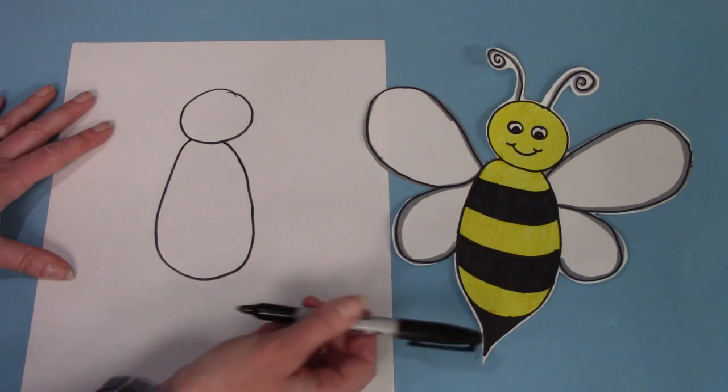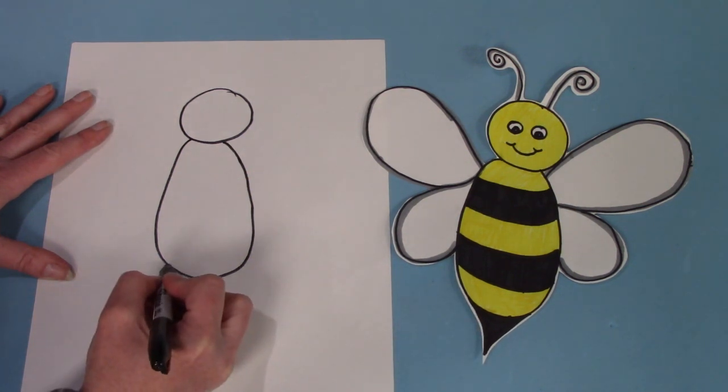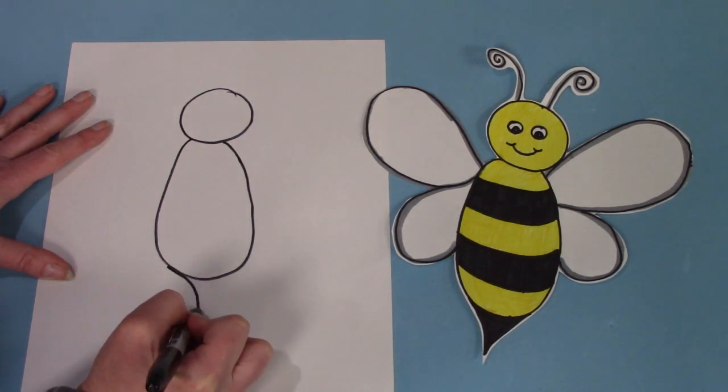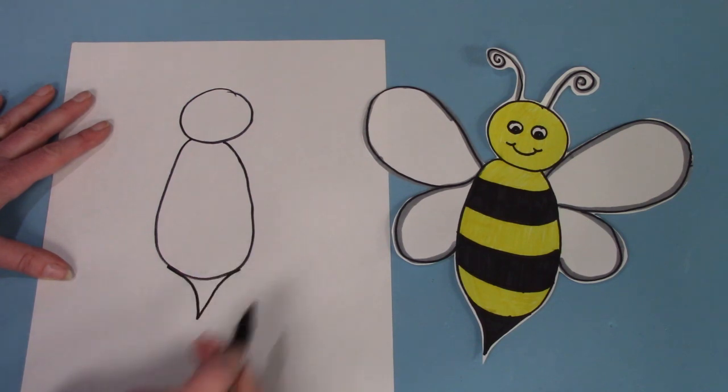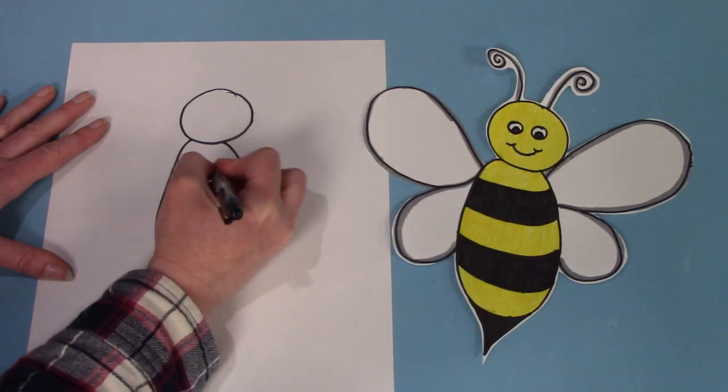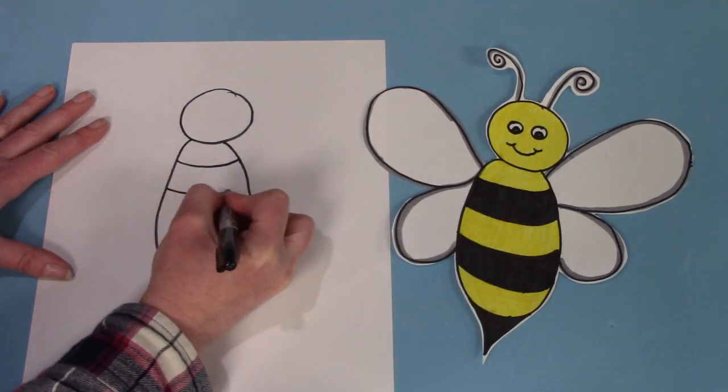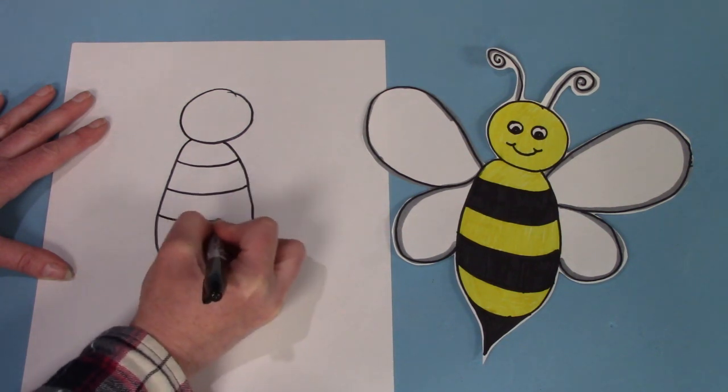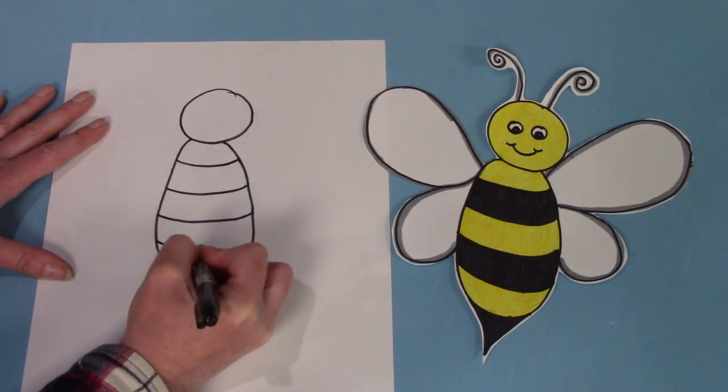Now for the tail, I'm going to draw kind of like a V. It will go down into a point and back up. Then I'm going to make some stripes. You can make as many stripes as you want to. They can be wide or narrow stripes.